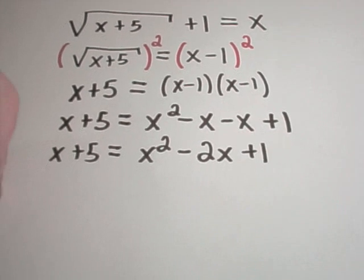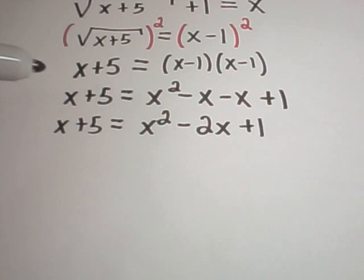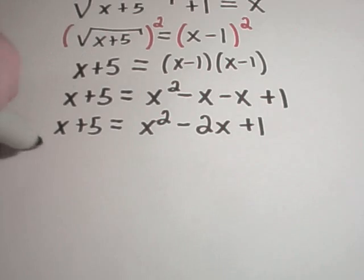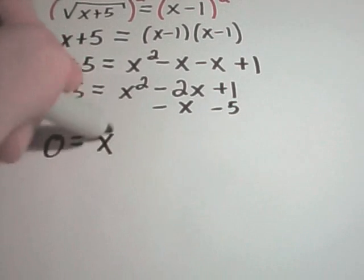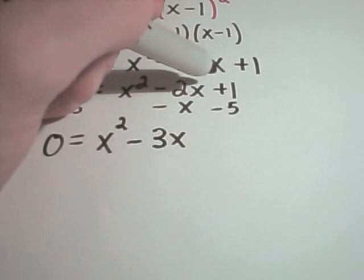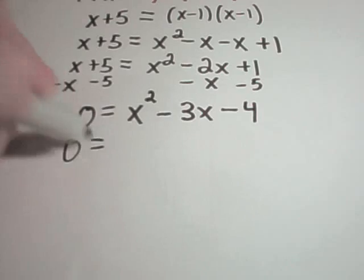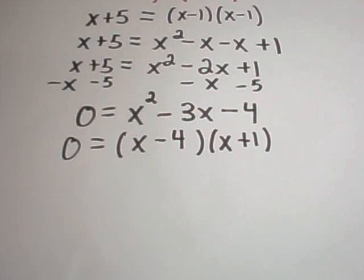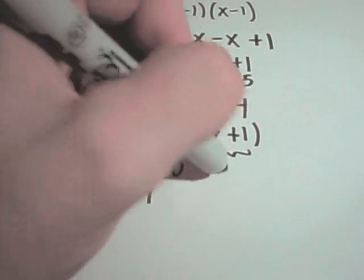So on the right side I'm going to have x squared minus 2x plus 1. Now we have to solve this resulting quadratic equation — with quadratic equations you set them equal to 0 and then either try to factor or use the quadratic formula. I'm going to subtract x and subtract 5 from both sides, giving me 0 equals x squared minus 3x minus 4. This factors as x minus 4 times x plus 1, so our potential solutions are x equals 4 and x equals negative 1.